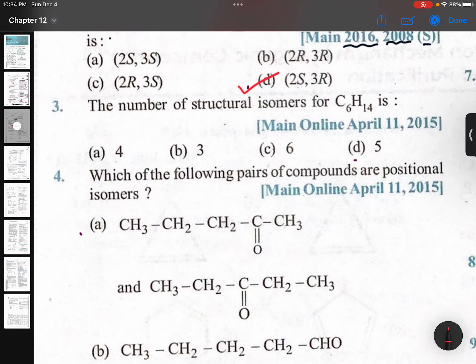Total number of structural isomers for C6H14. C6H14 is an alkane.